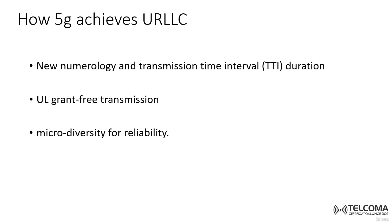There are other factors and concepts improving latency and helping 5G achieve high availability and ultra-low latency. The first is the new numerology and transmission time interval (TTI) duration. In 3GPP, a very flexible frame structure for 5G new radio was introduced. The new frame structure can offer different possibilities to shorten the TTI duration, which is a clear advantage compared to LTE.